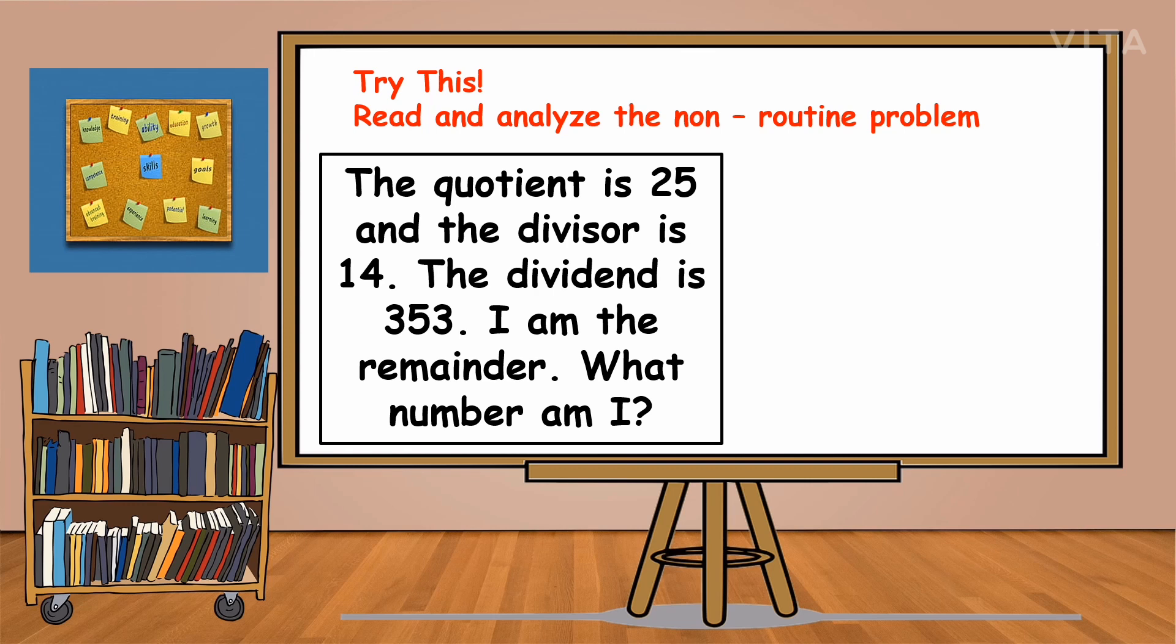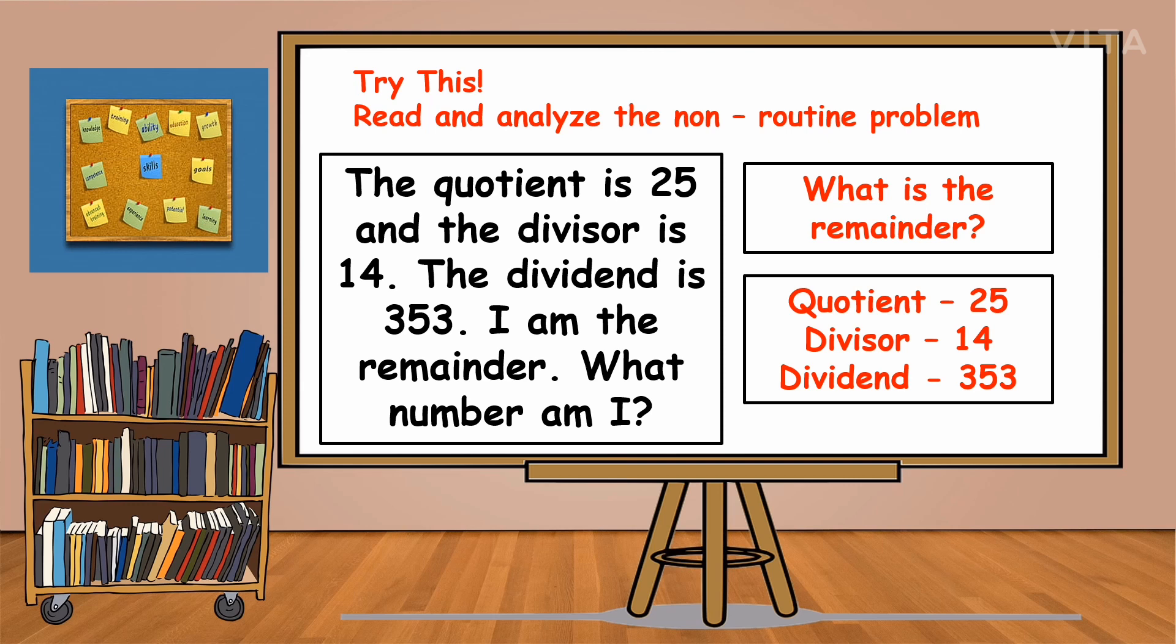Let's translate it. The quotient is 25—the quotient is the answer in division. The divisor is 14—the divisor is what's outside the division symbol or what divides the dividend. The dividend is the number we're dividing, which is 353. What's missing now is the remainder. So write again the given facts: quotient is 25, divisor is 14, and dividend is 353. Let us solve the remainder.